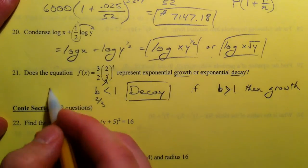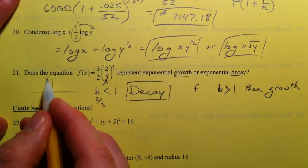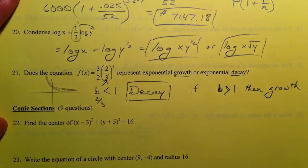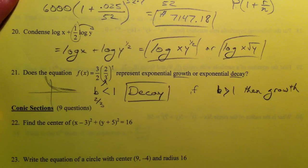Graphically, decay is going to look like that because you're multiplying by 2/3 every single time. And that is logarithms and some exponentials.